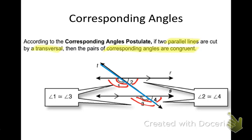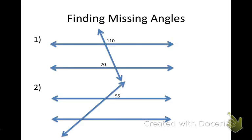What other types of angles did we talk about? Not just corresponding angles. We also talked about alternate interior angles. And there was another one — alternate exterior. And there was one last type: same side interior angles. So corresponding, alternate interior, alternate exterior, and same side interior — and corresponding angles are always congruent.